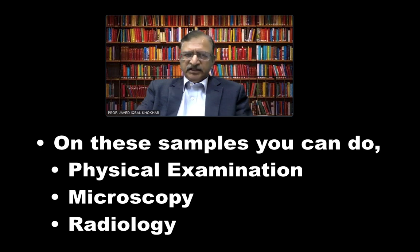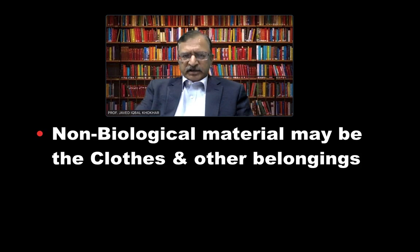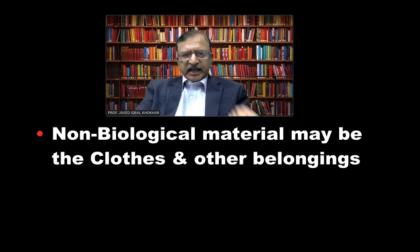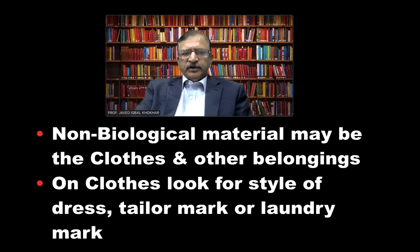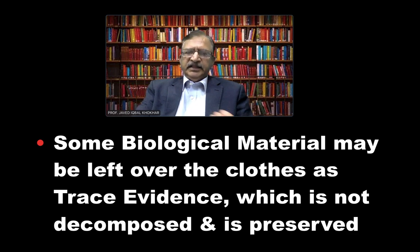For example, if you find a bone, first we establish whether it is bone, then whether it is human, and then age, sex, race — all the parameters can be applied. Similarly with hair and other detectable characteristics. The non-biological material may be clothes or any other belonging, such as a wristwatch, spectacles, a cap, an ID card, a driving licence, or any other document. On the clothes we look for the style of the crew, the tailor mark, and the laundry mark — this is very important information. Sometimes on the clothes there is biological material left over as a trace, such as blood, saliva, or semen, which if dried and not putrefied has been naturally preserved and can help greatly in identity.